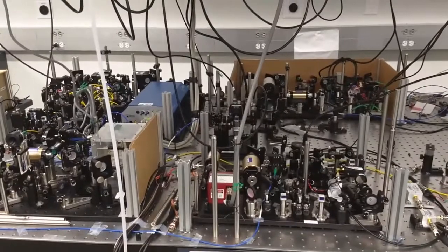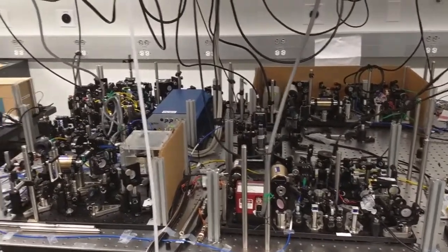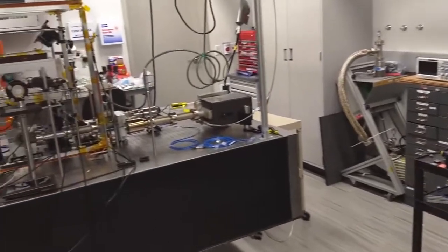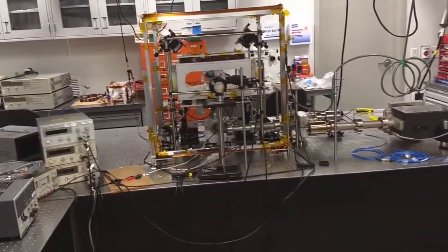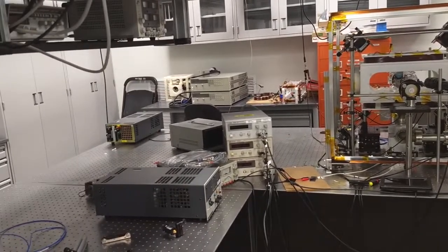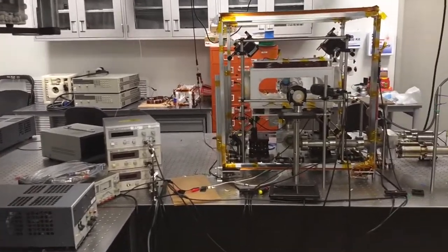These are the lasers for the atomic physics experiment. We stabilize in frequency these lasers and send the light to the optical table where we have our vacuum chamber. In this vacuum chamber we use laser cooling and trapping techniques to prepare the cold clouds of cesium atoms.